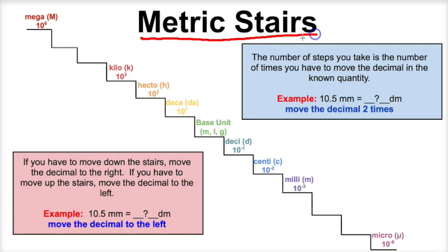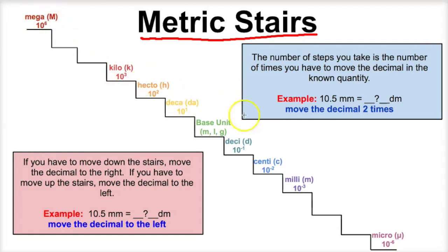So what we're going to do is we're going to learn how to do some metric unit conversions using metric stairs first. And then I'm going to show you how to do some metric unit conversions using dimensional analysis. Now metric stairs are actually an easy way of doing some metric unit conversions in your head. However, they require that you memorize the metric prefixes: mega, kilo, hecto, deca, deci, centi, milli, and micro. These are some of the more common metric unit prefixes when we talk about SI units and the metric system.